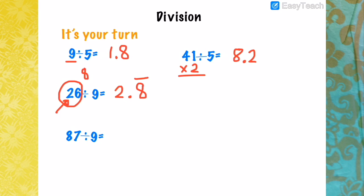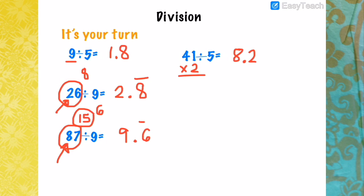Last example: 87 divided by 9. Add 8 and 7: 8 plus 7 is 15. Since it's still two digits, add again: 1 plus 5 is 6. Since 8 plus 7 is more than 9, add 1 to the first digit: 8 plus 1 is 9. The decimal value is 6. Therefore 87 divided by 9 is 9.6 repeating.